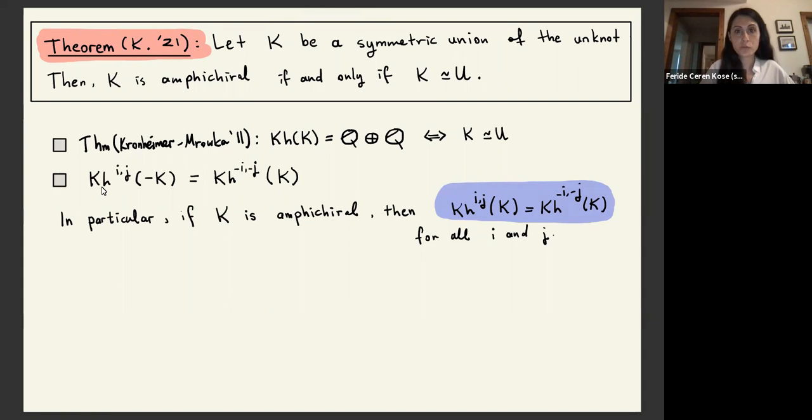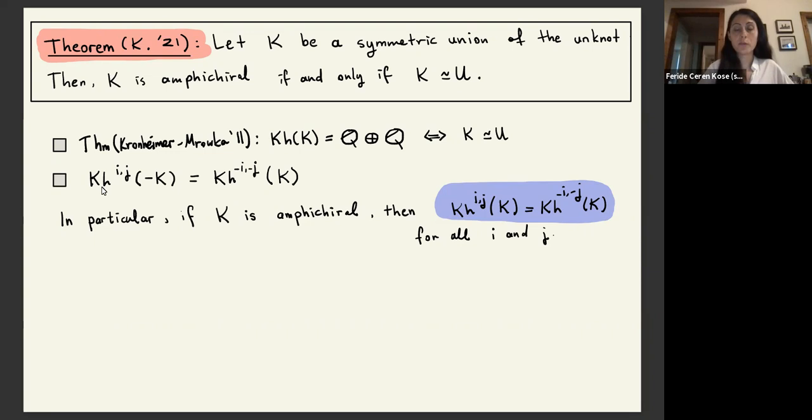And similar to the coefficient condition for the Jones polynomial for amphichiral links, there is also a relation that was highlighted in purple for the Khovanov homology of the amphichiral links. So we basically employ some tools in Khovanov homology and show that these two conditions cannot satisfy at the same time for these knots. Thank you for listening.